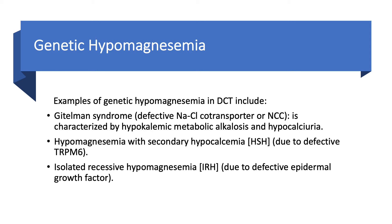With a thiazide diuretic, you get hypokalemia, hypomagnesemia, and metabolic alkalosis, but hypocalciuria. This is very critical in distinguishing these two syndromes. Gitelman: urine calcium is low. Bartter: urine calcium is high. But in both cases, you have sodium wasting, salt craving, and blood pressure on the low side.